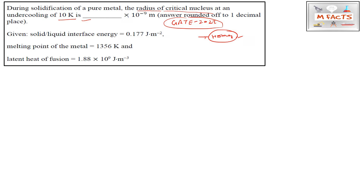This question is from the kinetics of nucleation and is very basic. In this type of question, they may ask for the radius of the critical nucleus or they may ask for the Gibbs free energy for the critical nucleus. The given data are: solid-liquid interface energy is given, melting point is given, and latent heat of fusion is given.